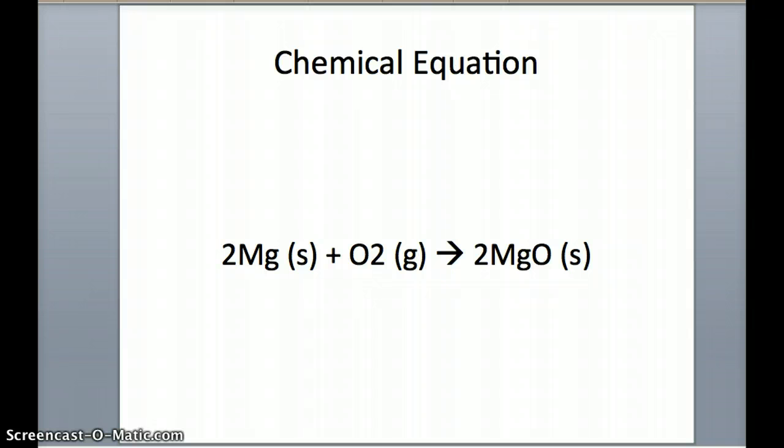The chemical equation for this reaction is two moles of magnesium per one mole of oxygen gas will produce two moles of magnesium oxide.